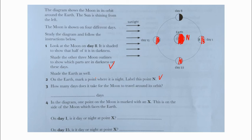Number three: How many days does it take for the moon to travel around its orbit? That's 29 days. Number four: In the diagram, one point on the moon is marked with an X. This is on the side of the moon which faces the Earth. On day one, is it day or night at point X?